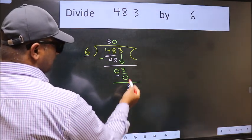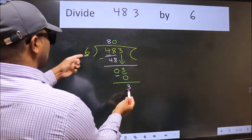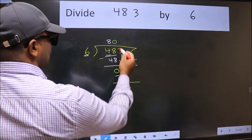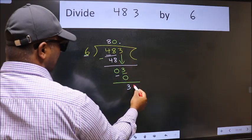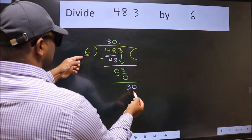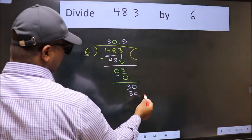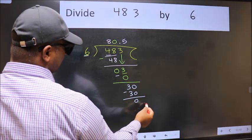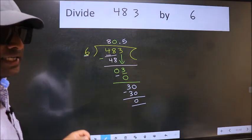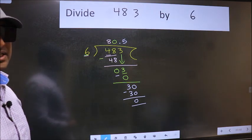Over here, we did not bring any number down, and 3 is smaller than 6. So now we can put dot and take 0. So 30. When do we get 30 in 6 table? 6 times 5 is 30. Now we subtract. We get 0. Did you understand where the mistake happens? You should not do that mistake.